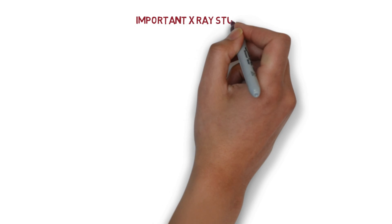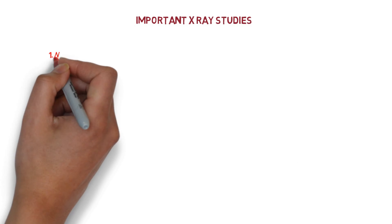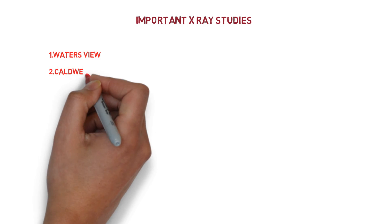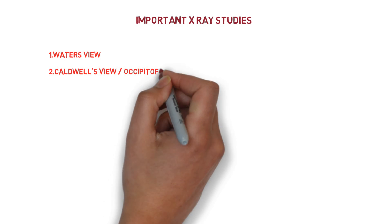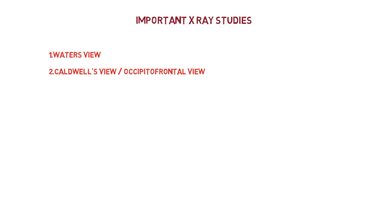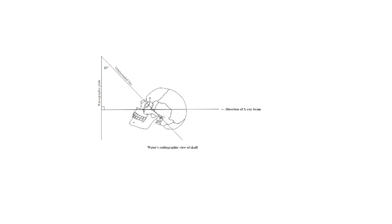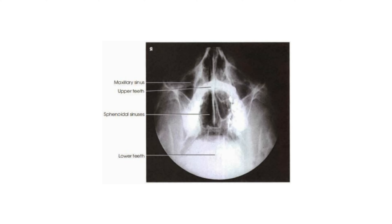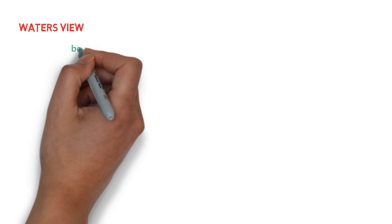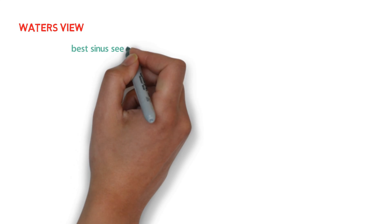Now we study the radiology of paranasal sinuses, focusing on Water's view and Caldwell's view. Water's view is also called the occipital-mental view or nose-chin position. It is taken such that the nose and chin of the patient touch the film while the X-ray beam is projected from behind. Water's view with open mouth is preferred as it also shows the sphenoid sinuses. The sinuses best seen in Water's view are the maxillary sinus and anterior ethmoidal sinus.